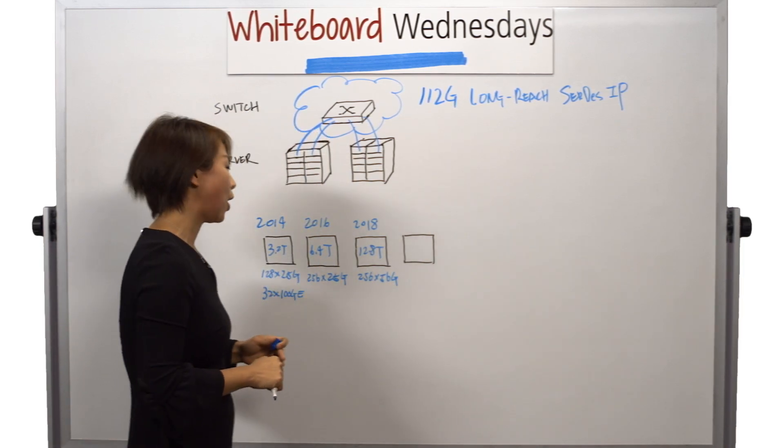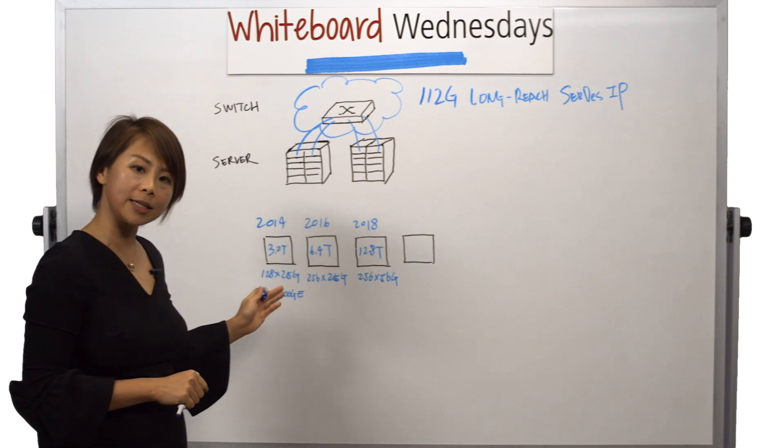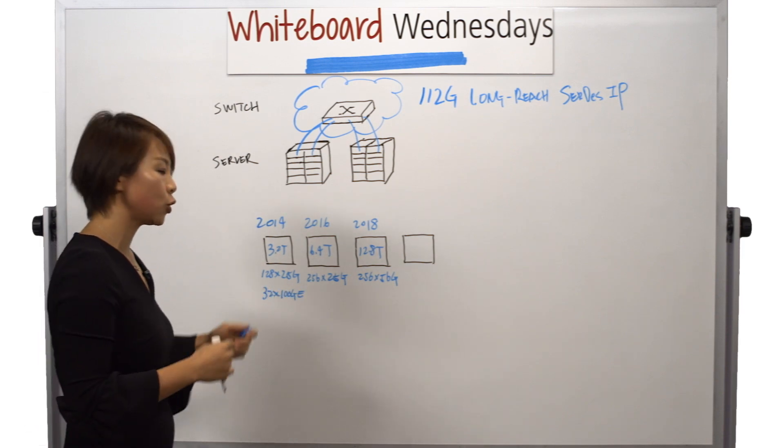I think you can see the trend now. Basically, the switch ASIC doubles its bandwidth every two years. So what's next?